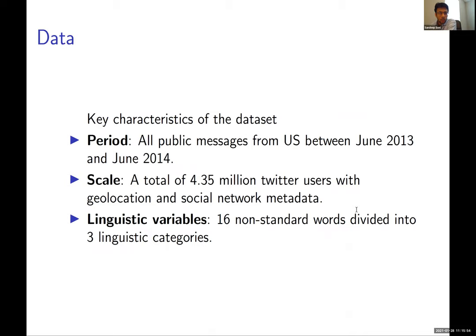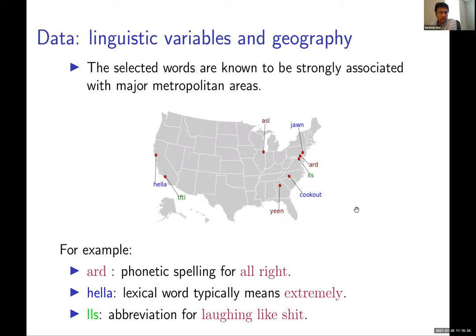We used a large Twitter dataset to test these hypotheses. We were fortunate enough to collect public messages for an entire year from all users geolocated within the US — over 4 million total users, so any model has to scale to that size. We tracked around 16 non-standard words divided into three categories. All the words had strong associations with major metropolitan areas. Examples include PFTI ('thanks for the invite,' used sarcastically), phonetic spellings like 'aight' for 'all right,' 'hella' meaning 'extremely,' and abbreviations like LLS — across eight metropolitan areas.